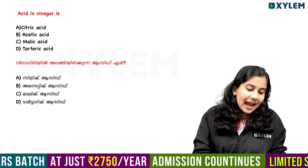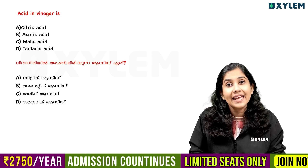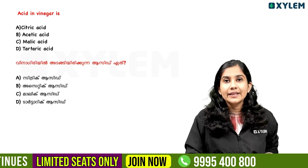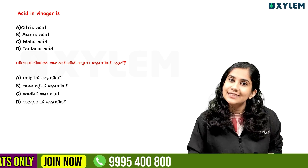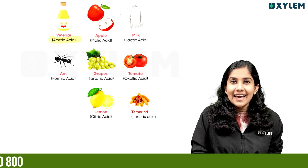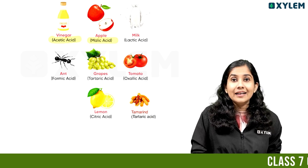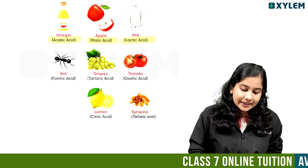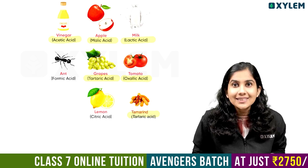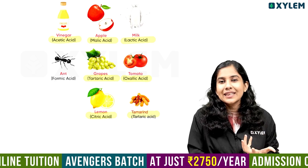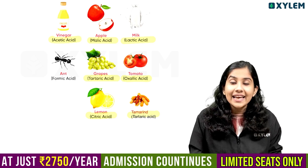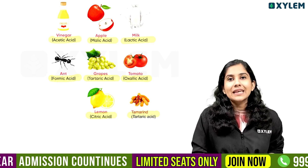The next question is about acids in food items. Vinegar contains acetic acid. Apple contains malic acid. Milk products contain lactic acid. Grapes and tamarind contain tartaric acid. Citrus fruits contain citric acid.